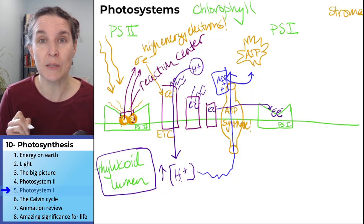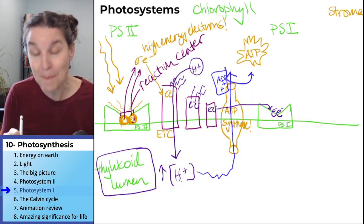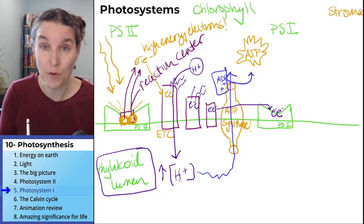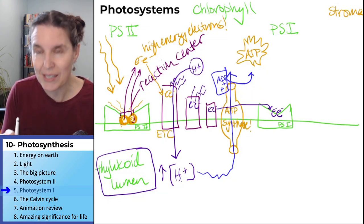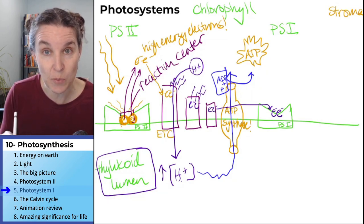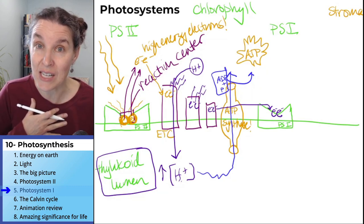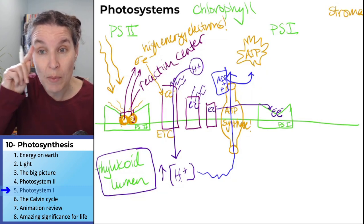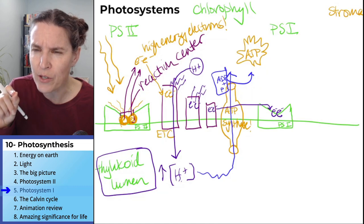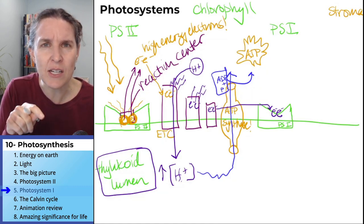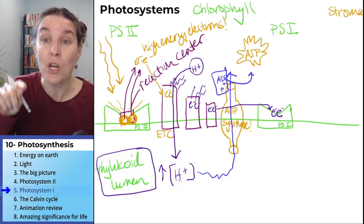That means that as long as we continue to have electrons from photosystem two, we're going to continue to run this electron transport chain and continue to produce ATP from the light of the sun. You probably are starting to wonder, wait a minute, how do we replace the electrons in photosystem two? Super important question.